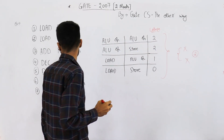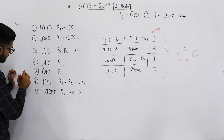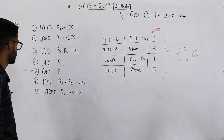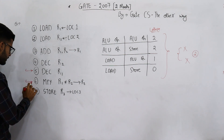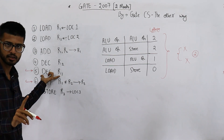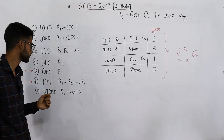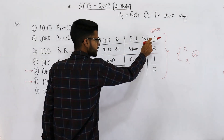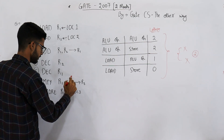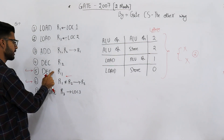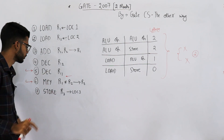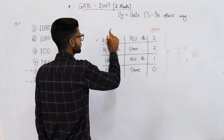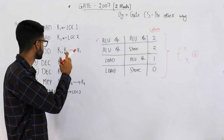For example, the fifth instruction produces result R1 and the sixth instruction uses R1 as an operand. So the fifth instruction produces the result and the next uses it, meaning there has to be a latency of two between these two. Both decrement and multiply are ALU operations, so this case means a latency of two.